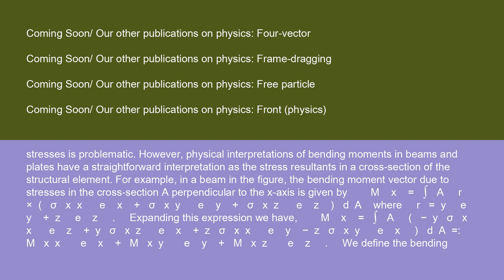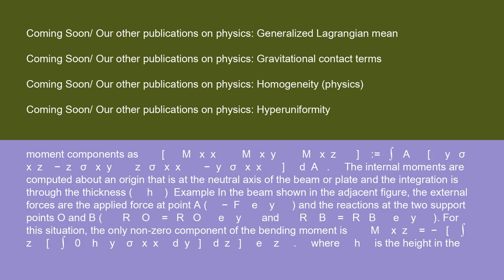physical interpretations of bending moments in beams and plates have a straightforward interpretation as the stress resultants in a cross-section of the structural element. For example, in a beam in the figure, the bending moment vector due to stresses in the cross-section perpendicular to the x-axis is given by Mx = ∫A ρ × (σxx·ex + σxy·ey + σxz·ez) dA where ρ = y·ey + z·ez. Expanding this expression we have Mx = ∫A (y·σxz - z·σxy)·ex + (z·σxx)·ey + (-y·σxx)·ez dA. We define the bending moment components as (Mxx, Mxy, Mxz) = ∫A (y·σxz - z·σxy, z·σxx, -y·σxx) dA. The internal moments are computed about an origin that is at the neutral axis of the beam or plate and the integration is through the thickness h.